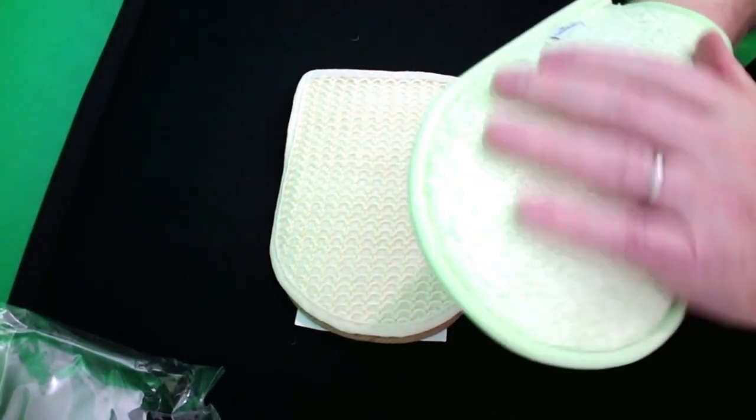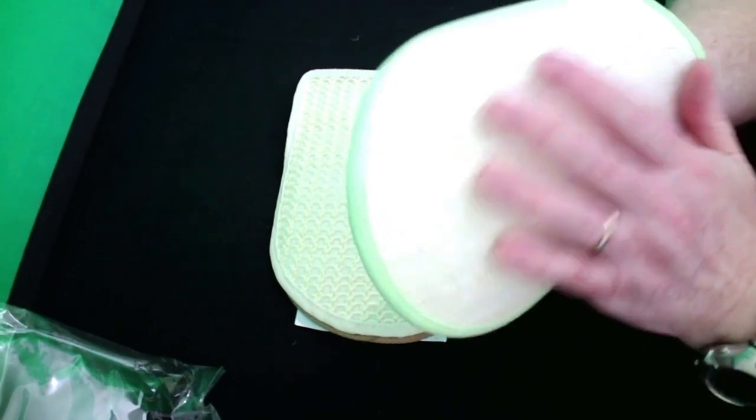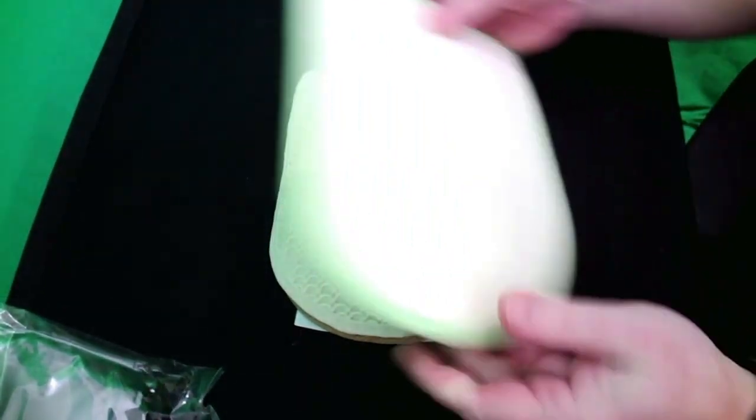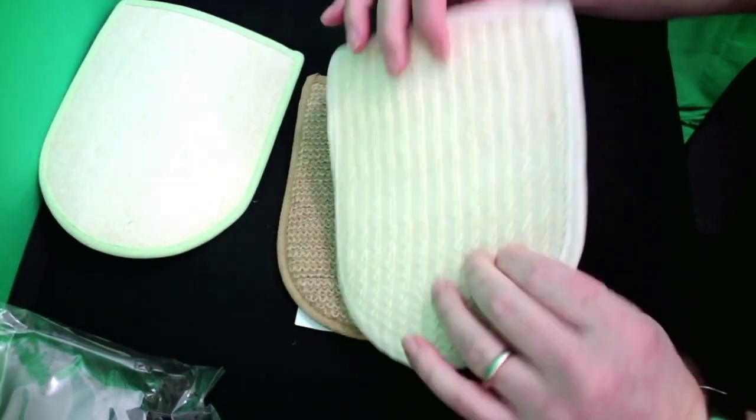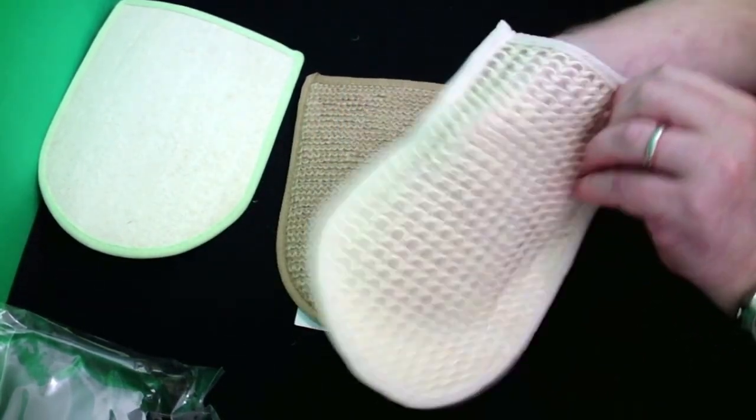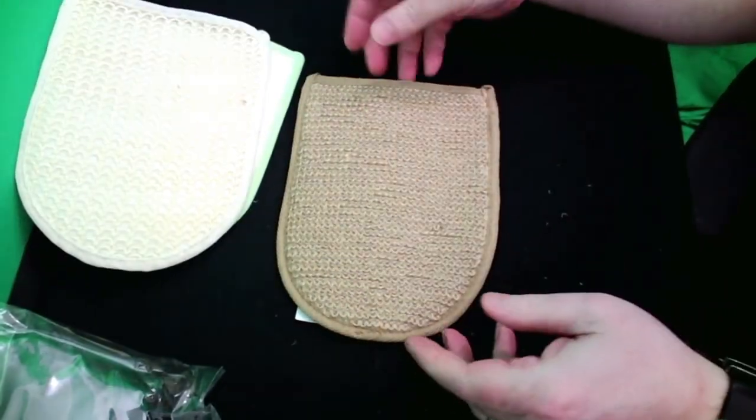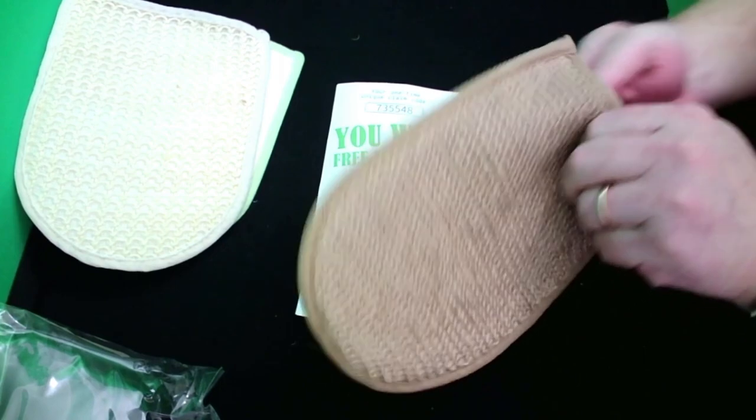You've got a lovely flannel and then you've got the exfoliator there and the exfoliators come in different types of texture. So you can exfoliate and then you've got your lovely flannel and then finally another one here.